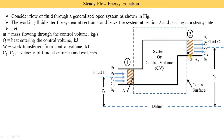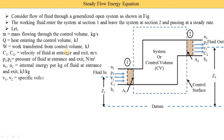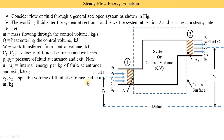W denotes work transfer with unit kilojoule. C1 and C2 are the velocities of the fluid at entrance and exit respectively, in meters per second. P1 and P2 are the pressures of fluid at entrance and exit, with unit Newton per meter square. U1 and U2 are the internal energy per kg of fluid at entrance and exit, in kilojoule per kg. V1 and V2 are the specific volumes of the fluid at entrance and exit, with unit meter cube per kg.